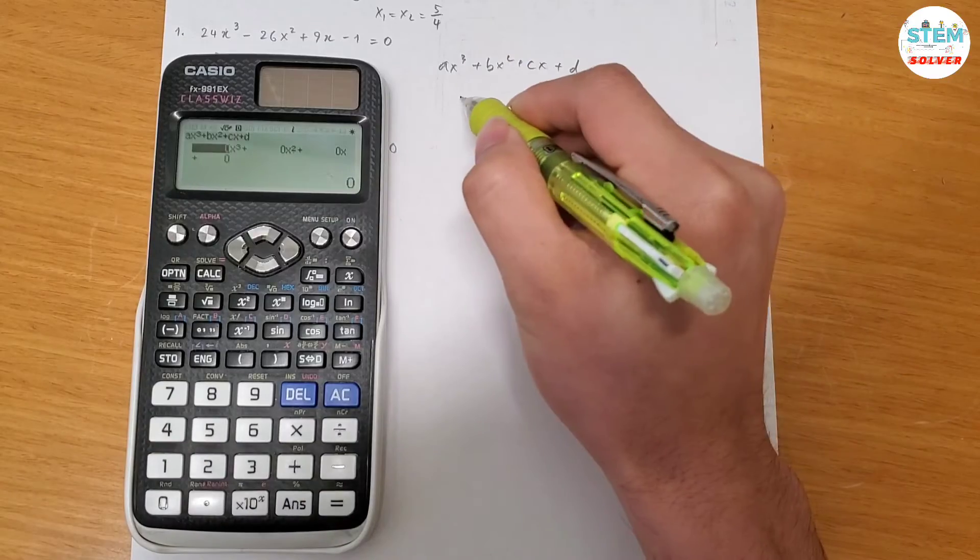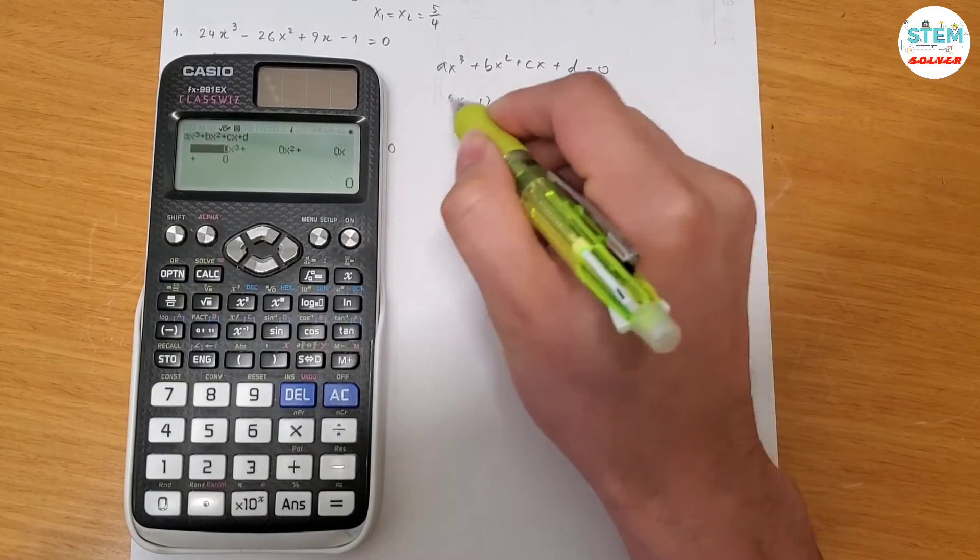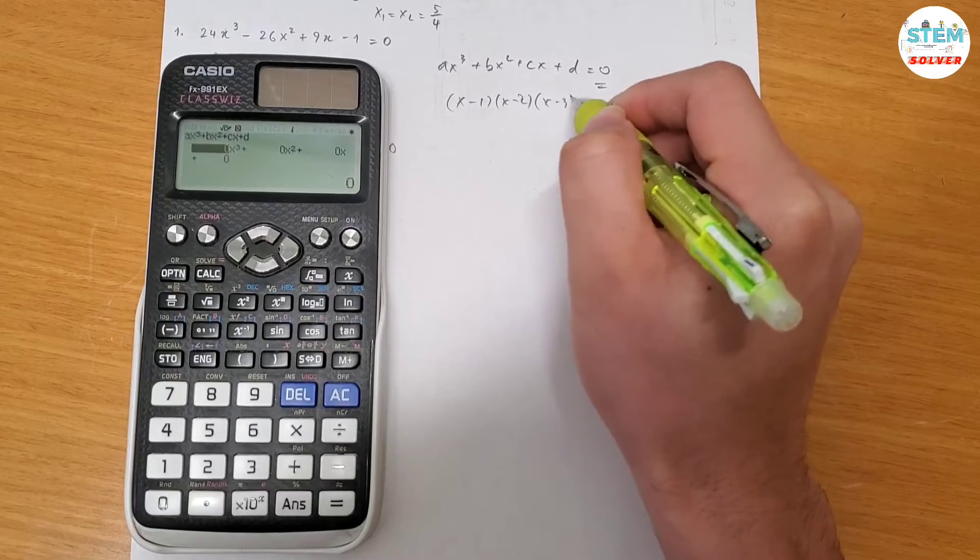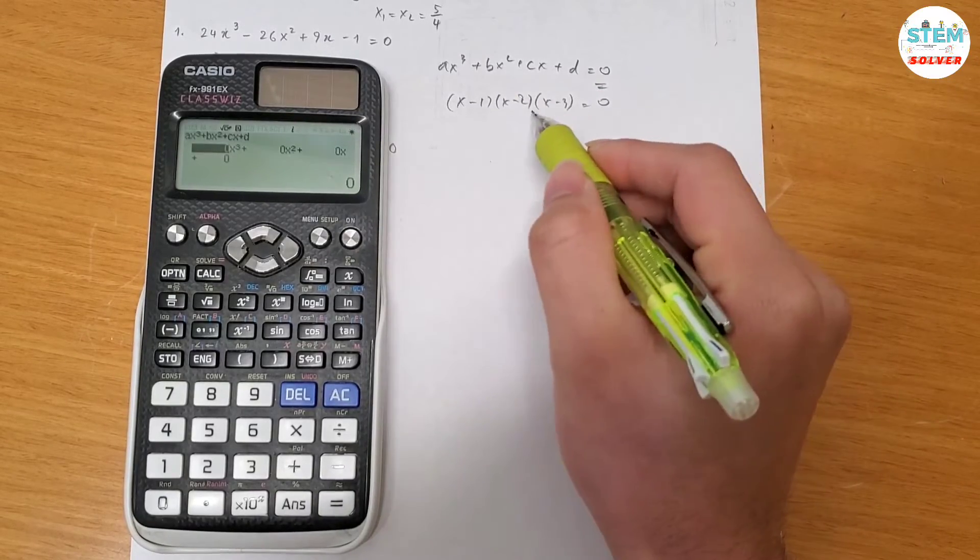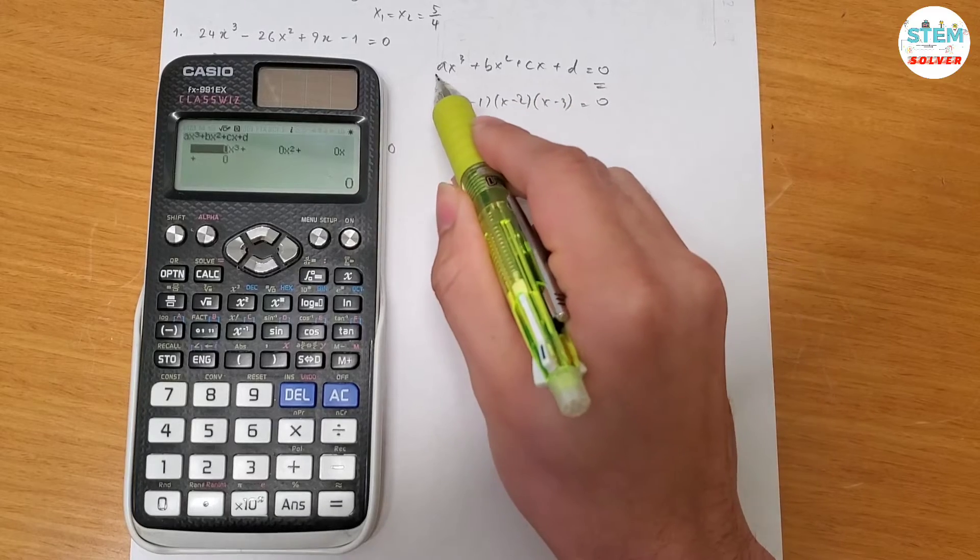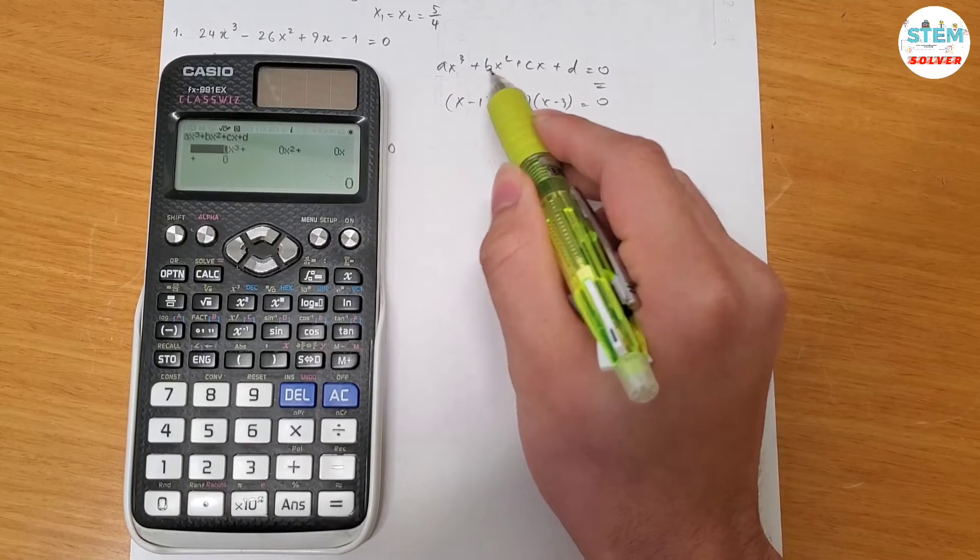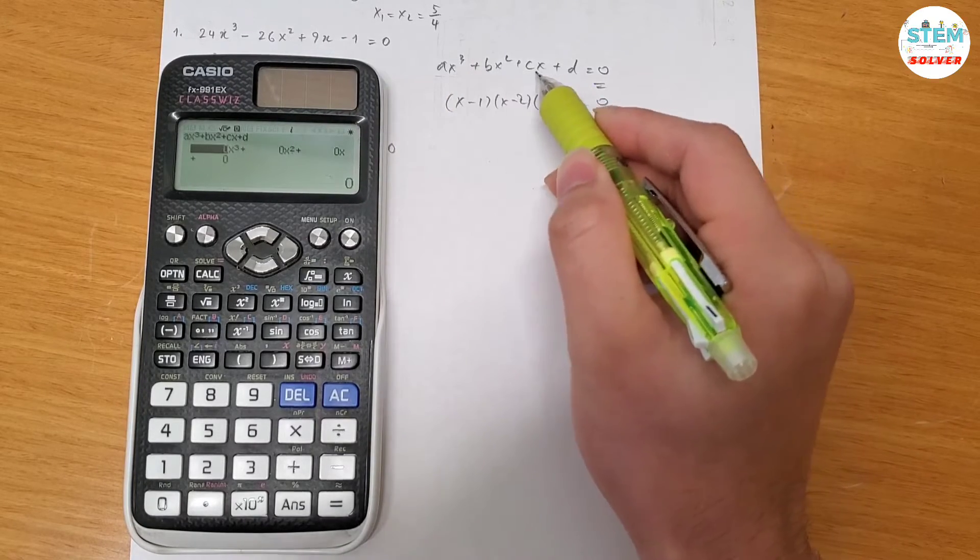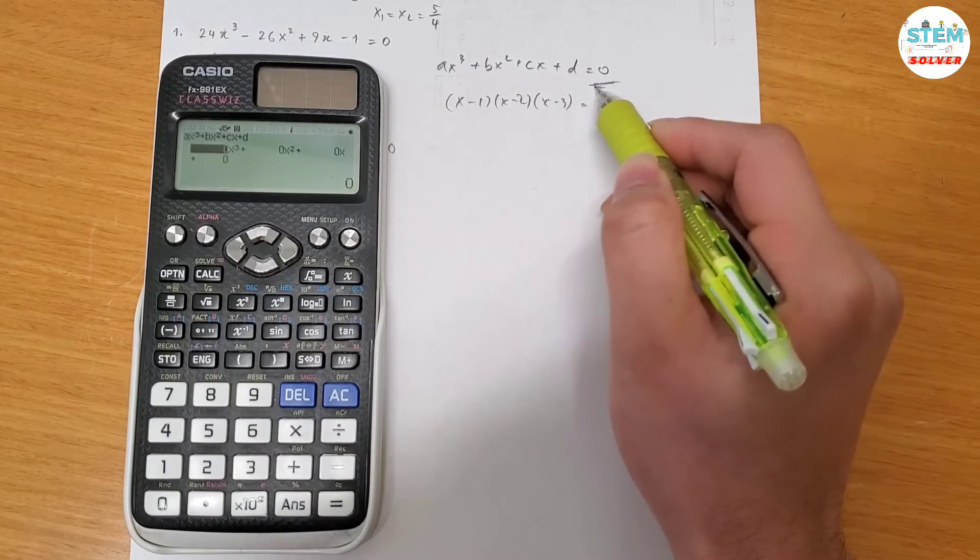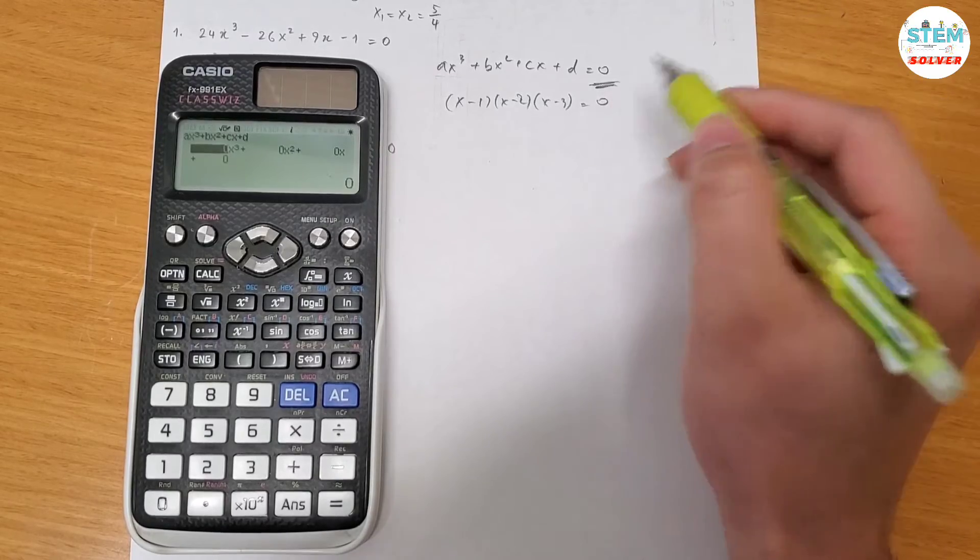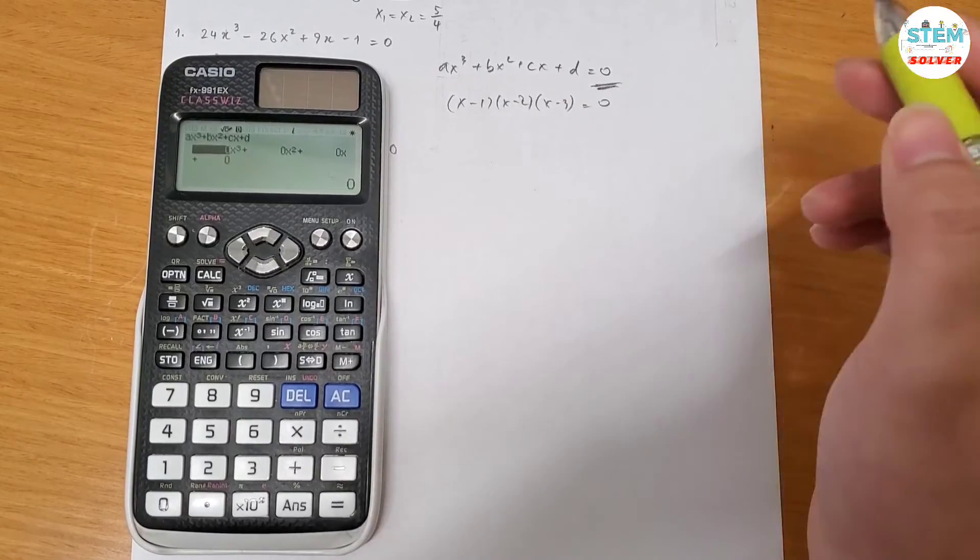So if you have it like x minus 1 times x minus 2 times x minus 3 equals 0 or equals a number, you have to distribute this out and then convert everything back into this form: something times x cubed plus something times x squared plus something times x plus a constant equals 0. On the right side, it has to be 0, no matter what. It cannot be a number different from 0. Otherwise, this method won't work.